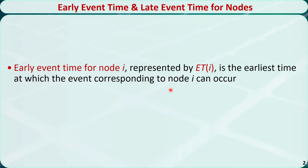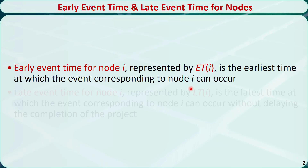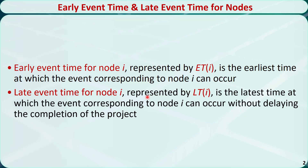Early event time and late event time are associated with nodes in the network. Early event time of node i is denoted by ET_i. It is the earliest time at which the event corresponding to node i can occur. Late event time for node i is denoted by LT_i. It is the latest time at which the event corresponding to node i can occur without delaying the completion of the project.